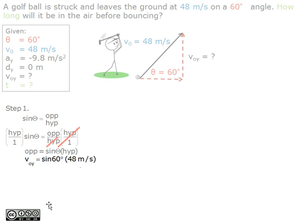Next, we plug in the numbers that were given, giving us a vertical velocity of 41.569 meters per second.